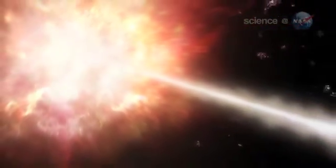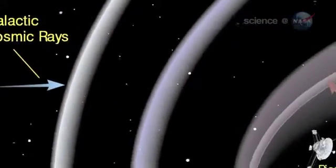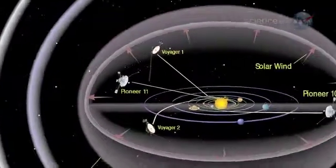Cosmic rays are subatomic particles accelerated to nearly light speed by distant black holes and supernova explosions. When these microscopic cannonballs try to enter the solar system, they have to fight through the sun's magnetic field to reach the inner planets.